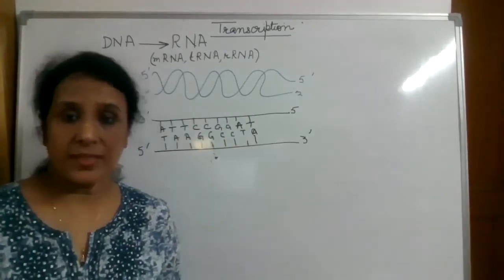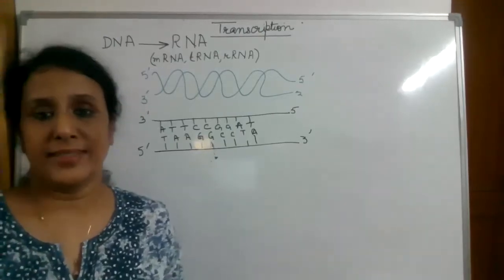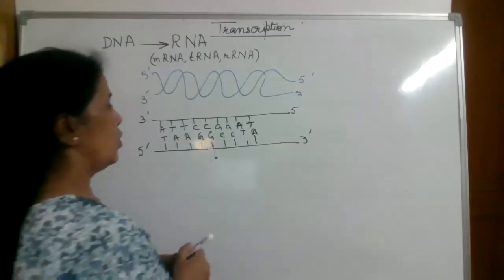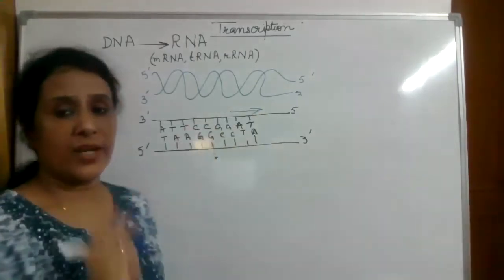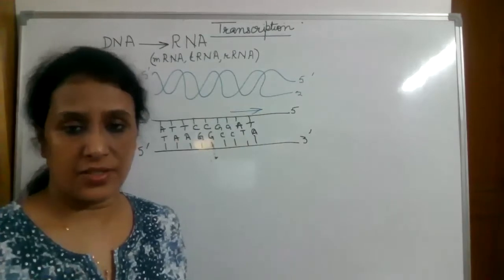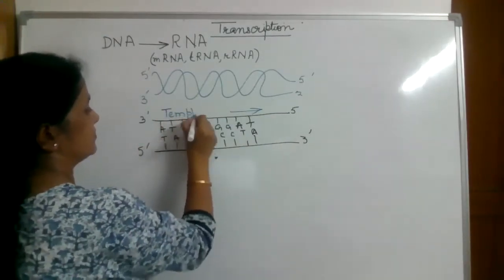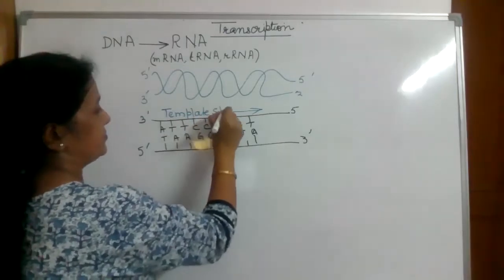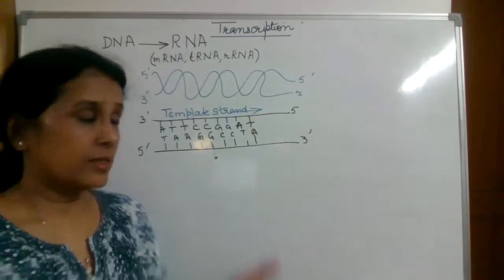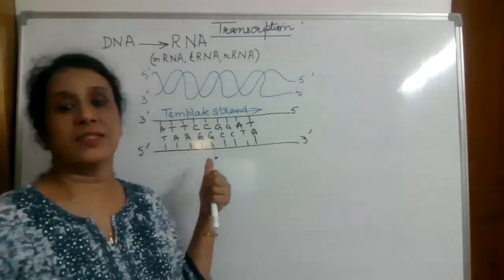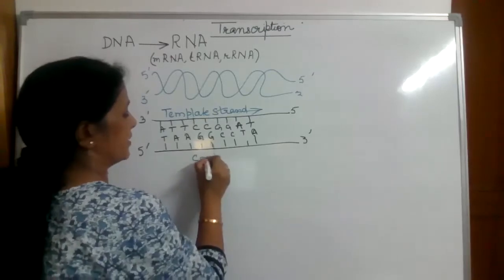Transcription occurs only on one strand of DNA. It occurs only on the strand running in the 3' to 5' direction, and this is called the template strand. The other strand that is not participating in transcription is known as the coding strand.